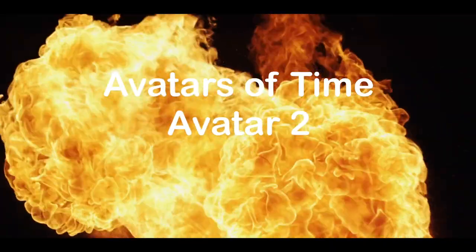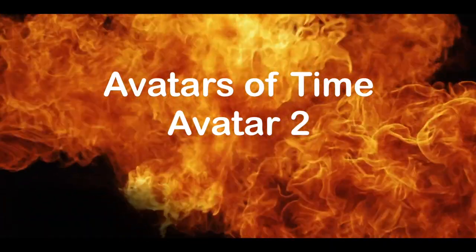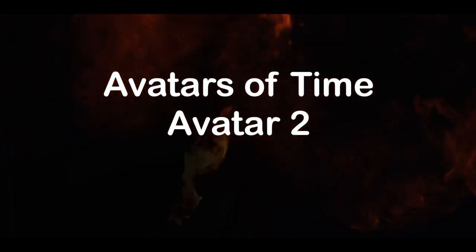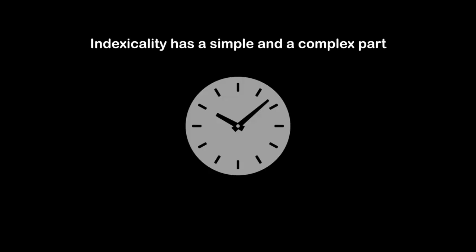Avatars of time. Avatar 2. This avatar is called indexicality. The indexical function of time is there to synchronize our movements. We can talk about a certain moment in time because we have made some agreement on this.